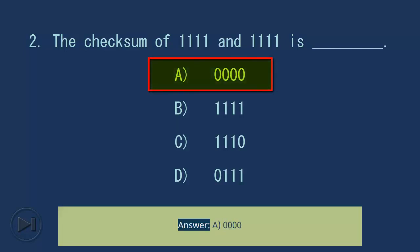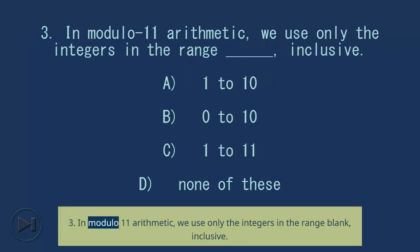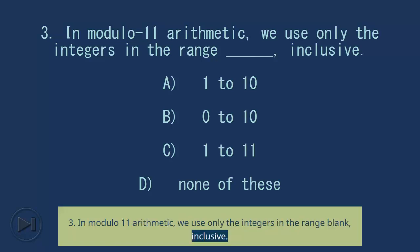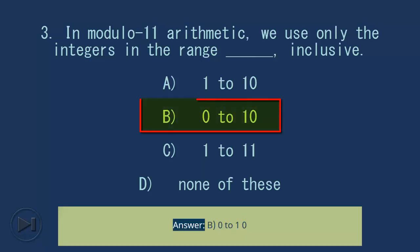Answer: A, 0000. Question 3: In modulo 11 arithmetic we use only the integers in the range blank inclusive. A) 1 to 10, B) 0 to 10, C) 1 to 11, D) none of these. Answer: B, 0 to 10.